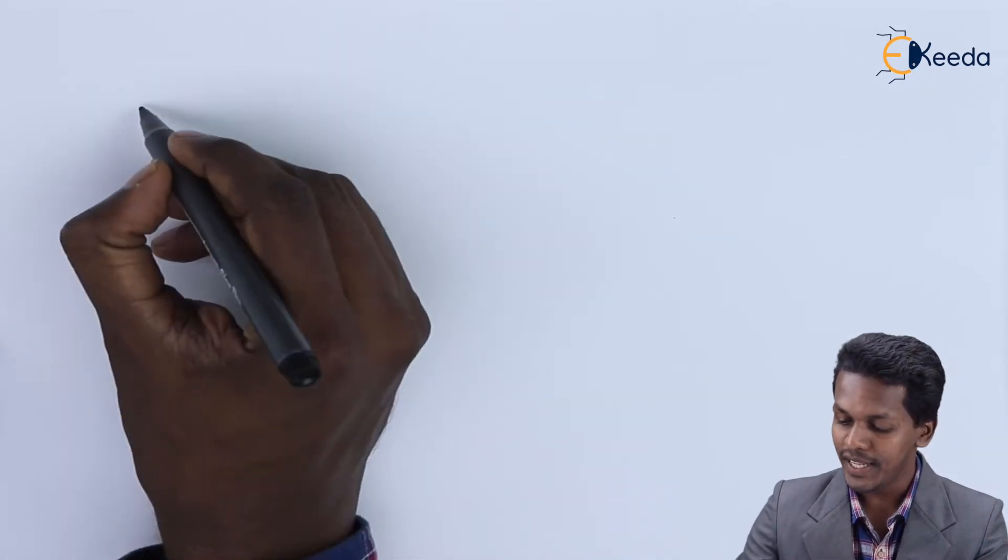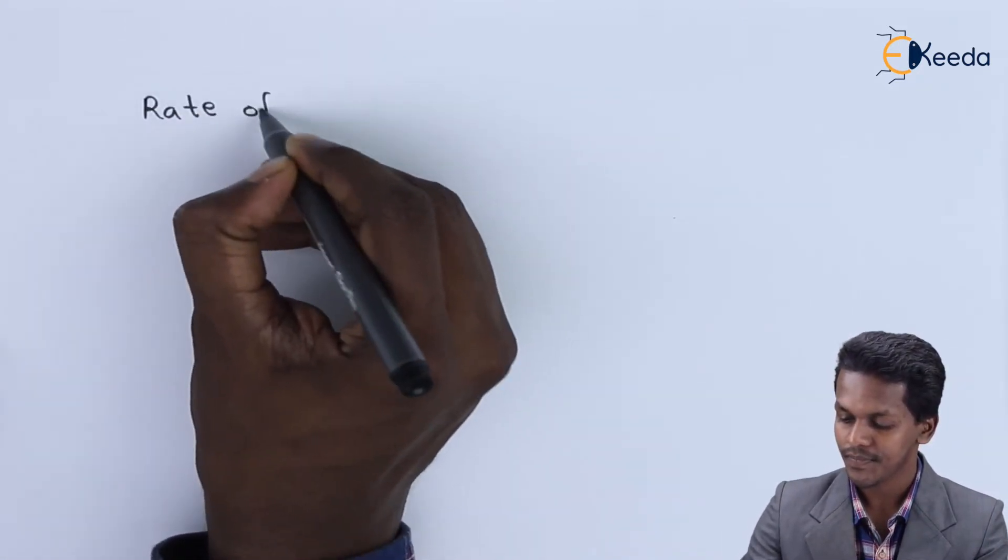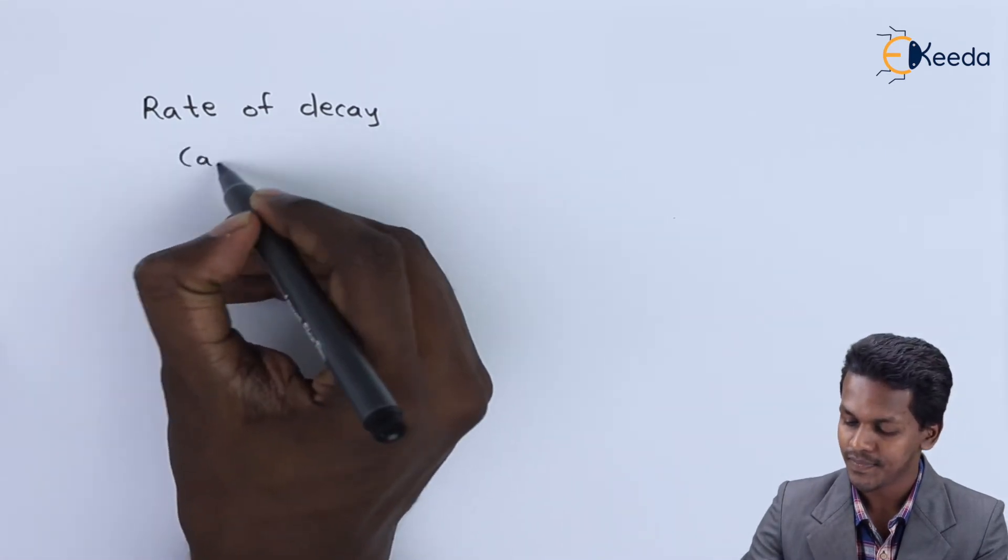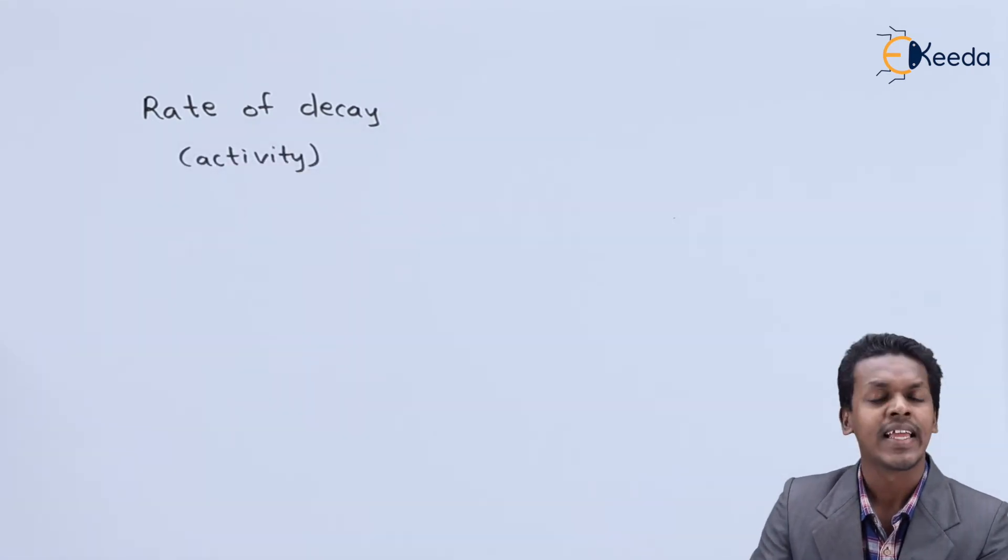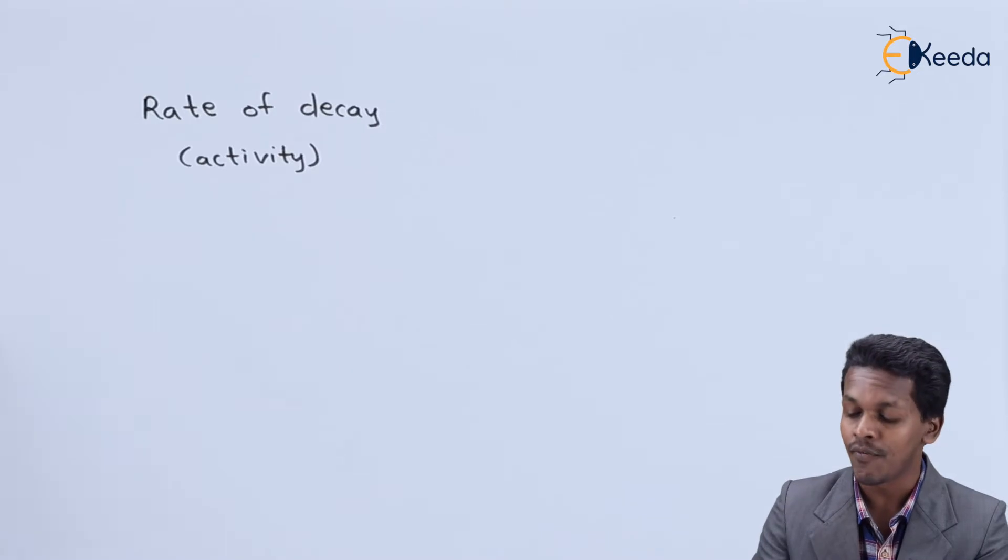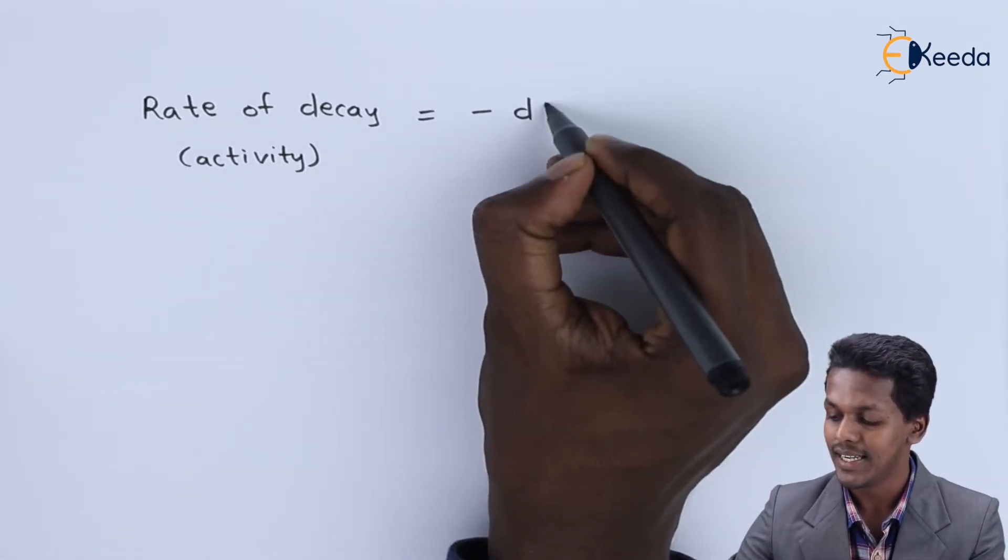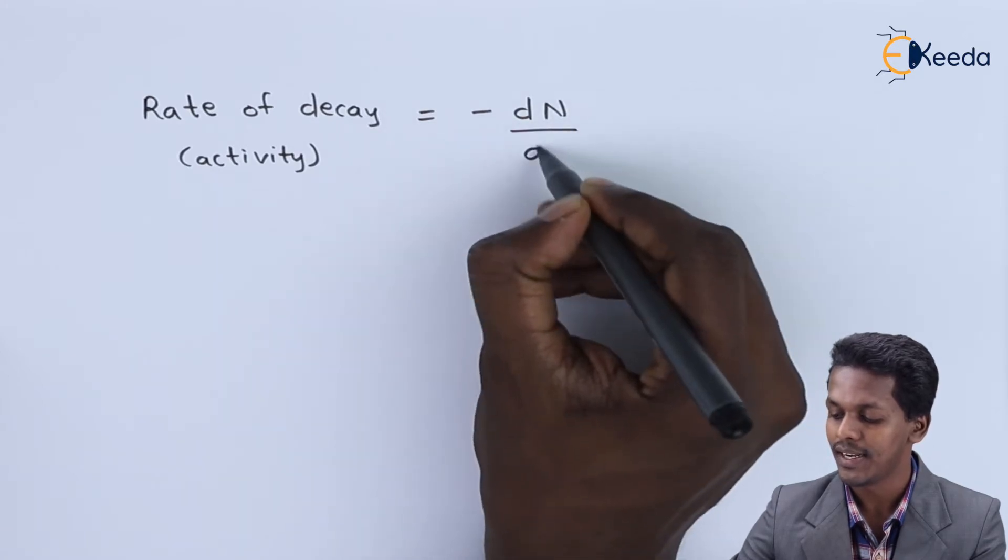So rate of decay, which is also known as activity, can be represented as: it equals minus dN upon dt.